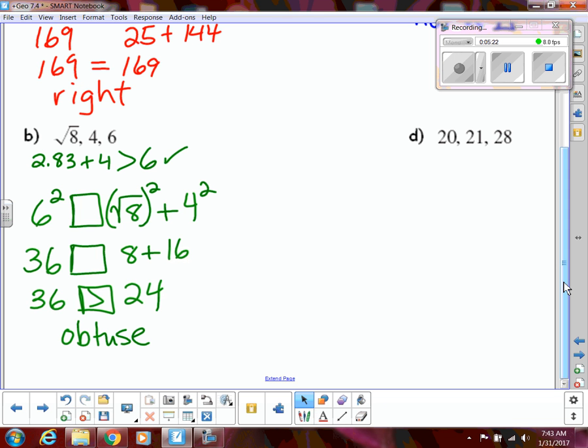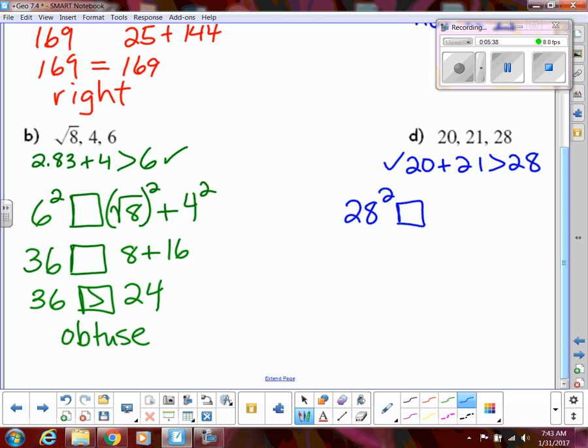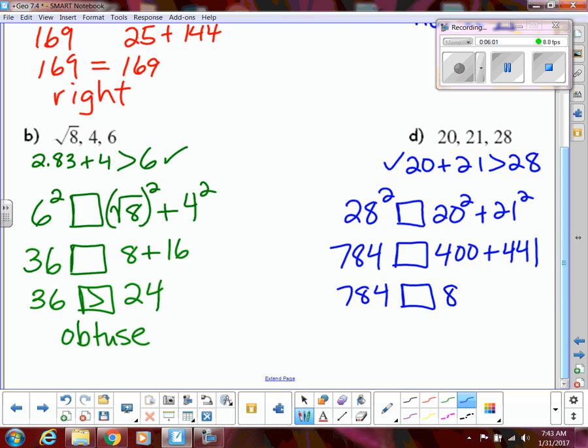All right. And then our last one. Two smaller sides. 20 plus 21. Is that larger than 28? Absolutely. So, we know that's a triangle. And then my 28 is my c. So, I'm going to do 28 squared and then 20 squared plus 21 squared. So, 28 squared is 784 and we have 400 plus 441. So, if I add those together I'm going to get 841 which is larger than 784. So, our c squared is now smaller which means that our triangle is acute.